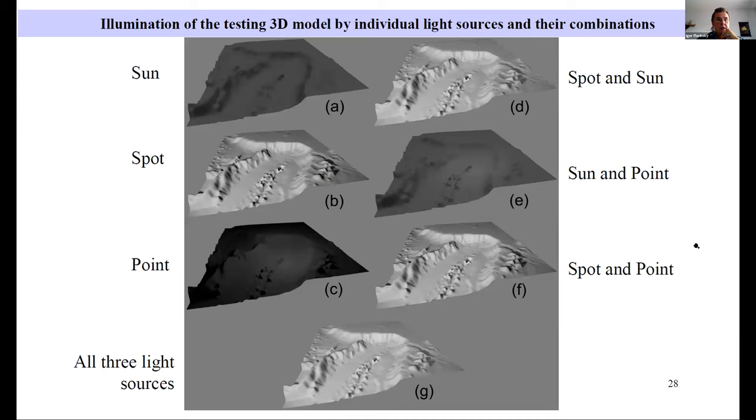Here you can see different results for illumination of the testing 3D model using different combinations of three light sources: sun, spot, point, sun and spot, sun and point, spot and point, and using all three light sources.